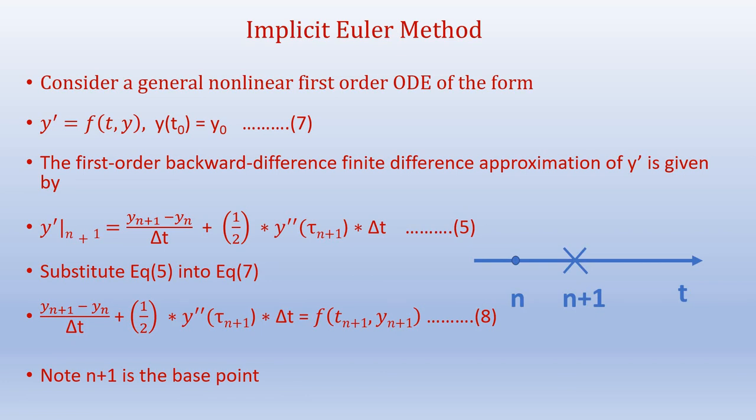When we substitute equation 5 into equation 7, we get y n plus 1 minus y n over delta t, plus half times y double dash of tau n plus 1 times delta t, equals f of t n plus 1 comma y n plus 1.